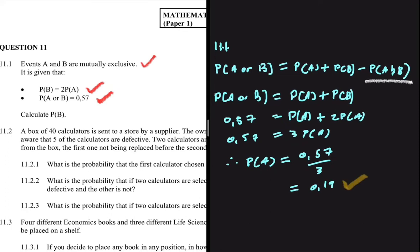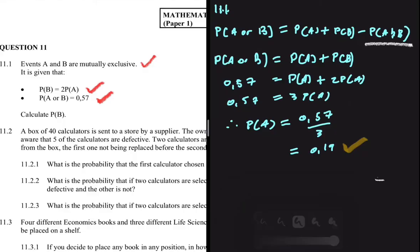But don't forget, we're not looking for the probability of A — we're actually looking for the probability of B. The probability of B equals 2 multiplied by the probability of A, which is 0.19. That gives us 0.38 as the probability of B. That is 11.1.